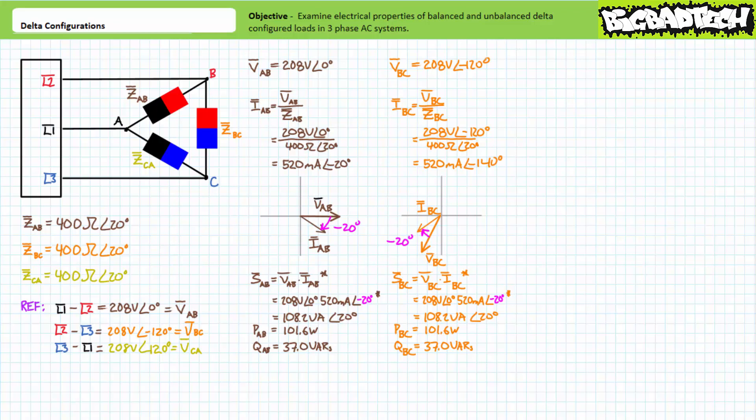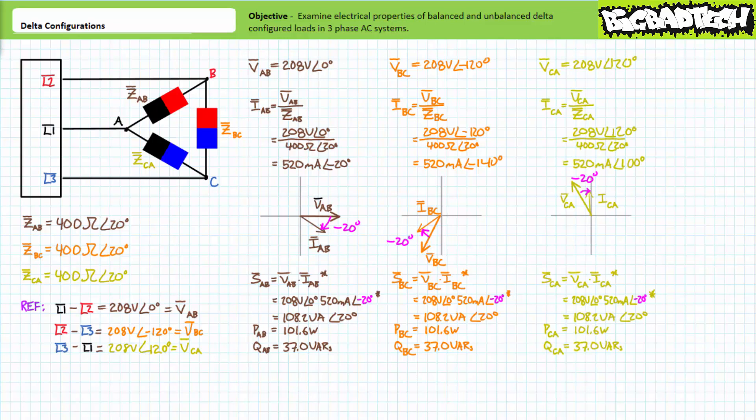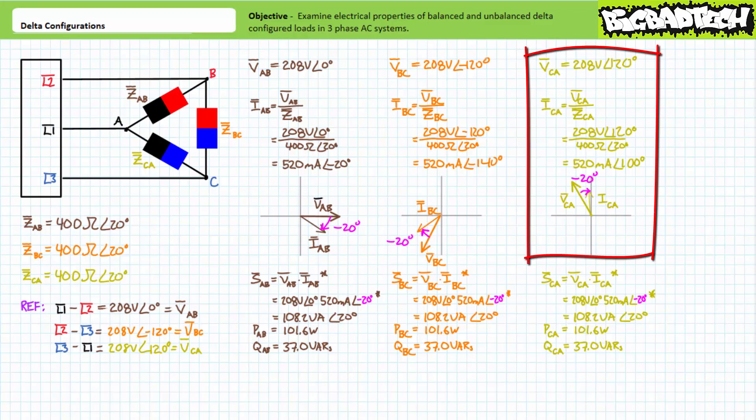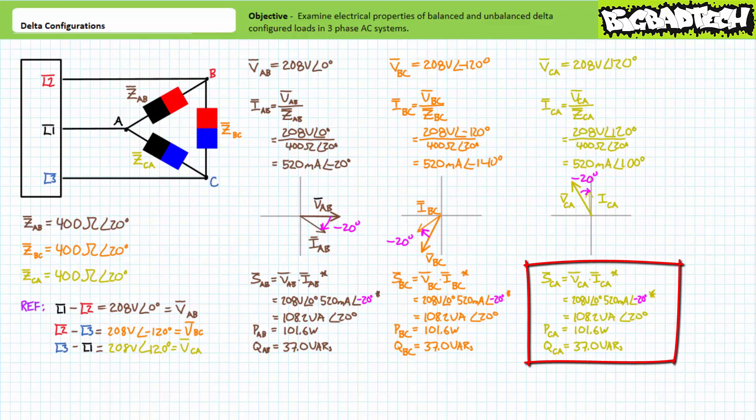Balanced delta configurations allow us to save time because each leg is identical. Current through ZCA will also have a magnitude of 520 milliamperes and lag the voltage across it by a relative 20 degrees, giving an angle of 100 degrees. ZCA will also experience 108.2 volt-amperes of apparent power, of which 101.6 watts is real power and 37 vars is reactive. Calculations support these predictions: Ohm's law for ZCA confirms 520 milliamperes at 100 degrees, with current lagging voltage by 20 degrees.